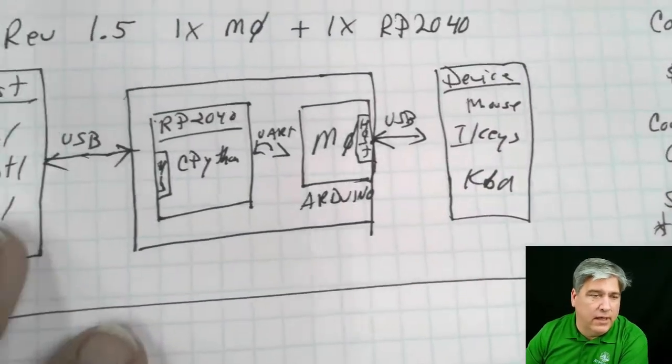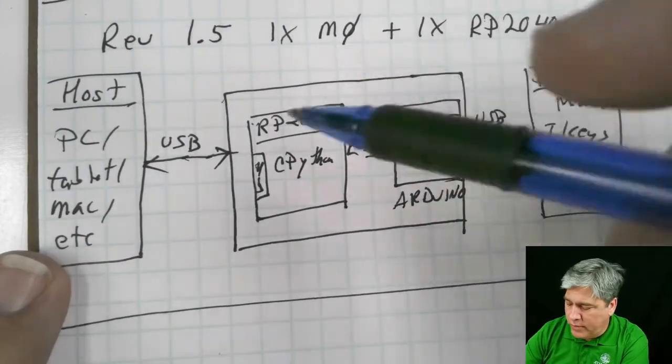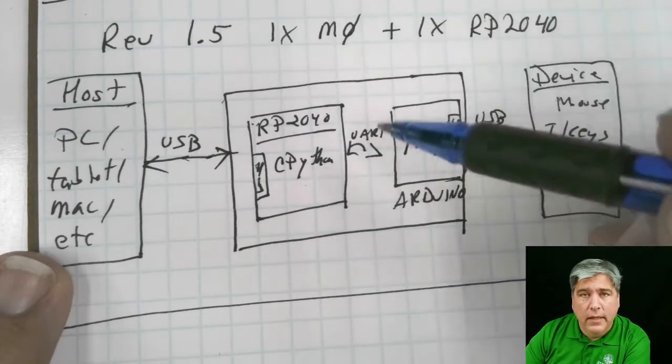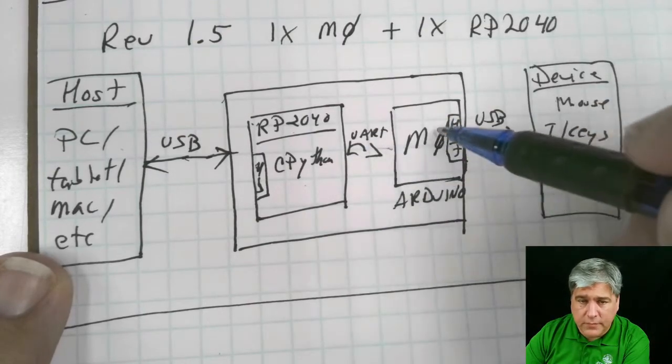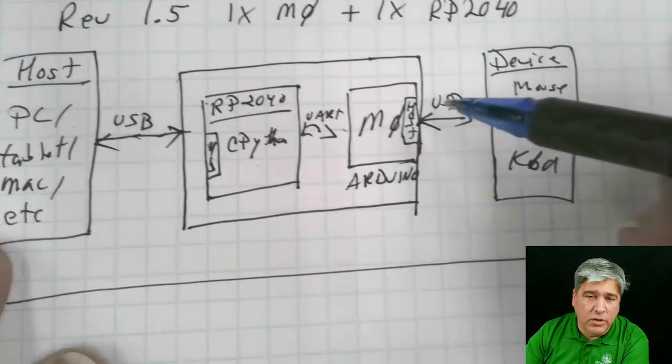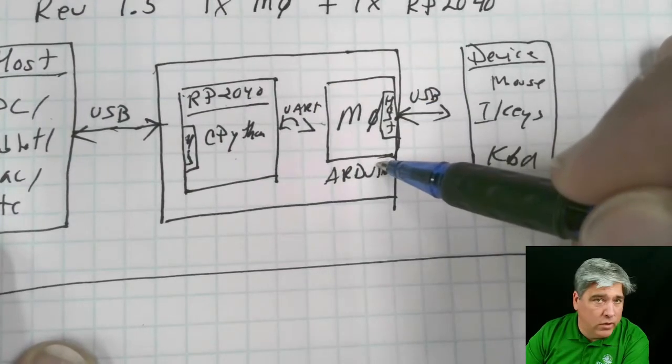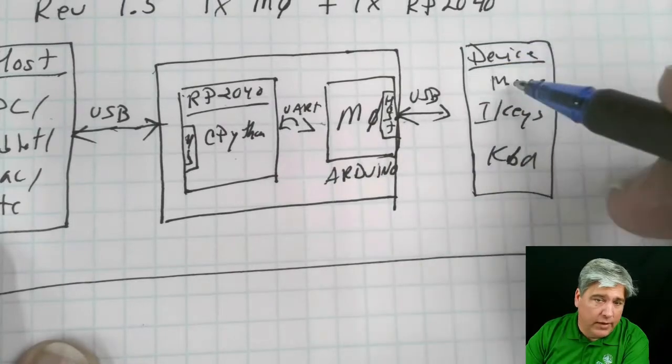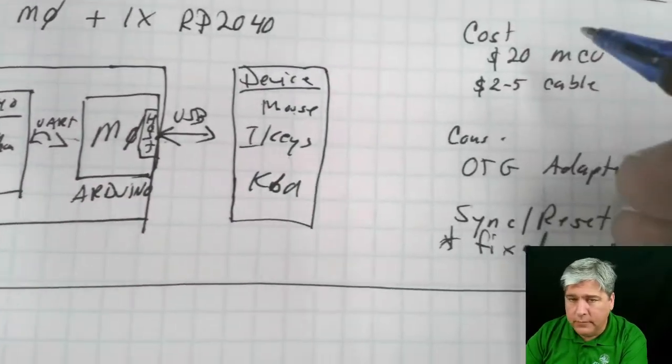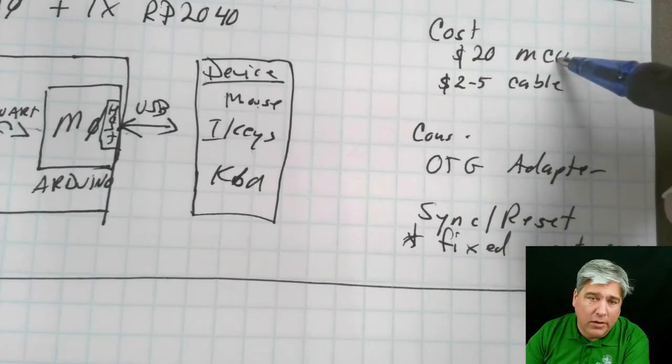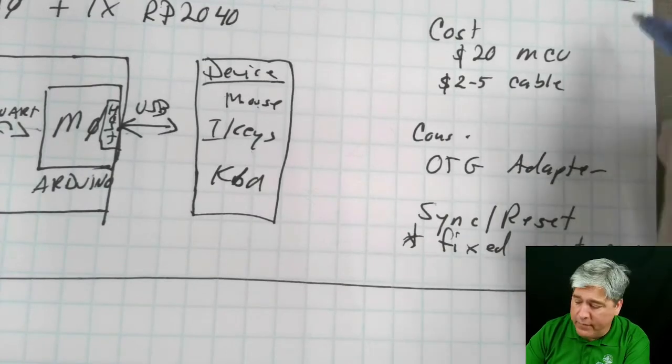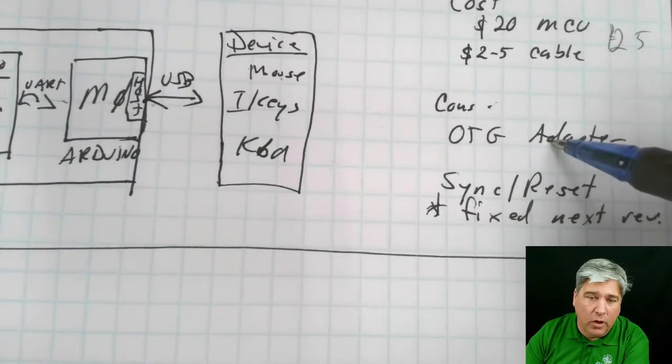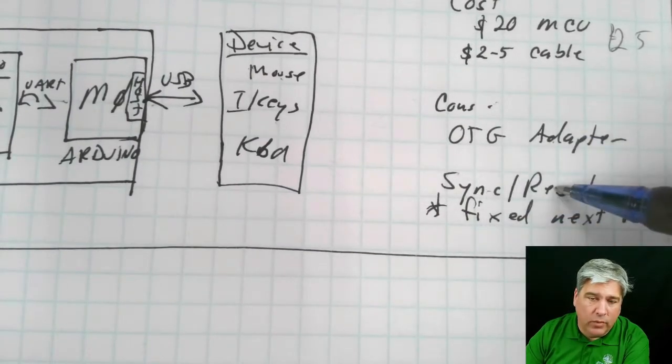And if we want to do more complicated filtering, like averaging or logarithmic filtering and things like that, this is more powerful and much easier to do than it was on the trinket. The downsides really are we still have to use an on-the-go or a weird cable. So kind of looking at how this works now, it looks a lot like the first one. The host talks to the RP2040, which is running CircuitPython. That talks over UART or serial to the trinket, which is running Arduino.